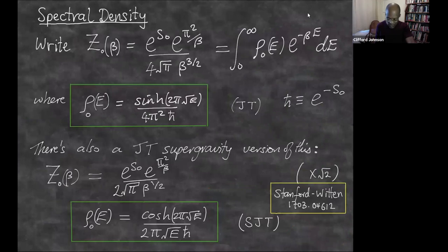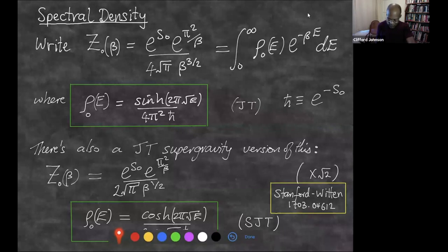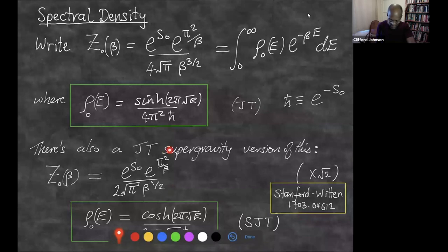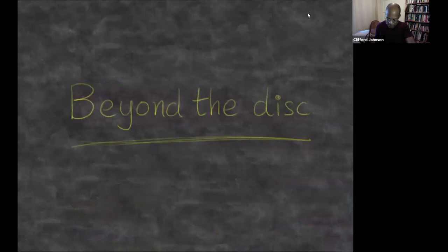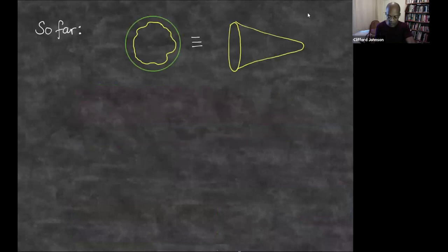There's also a supergravity version of this story — refer to Stanford and Witten for more on that. The output is somewhat similar, with a slightly different function and different powers of beta. Crucially, when you do the transform to the spectral density, you have this cosh(sqrt(E))/sqrt(E) behavior, which will feature a lot in what I'm going to talk about later.